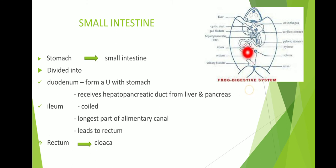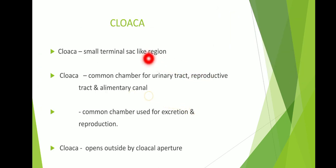The duodenum is followed by the ileum, which is the longest part of the alimentary canal. The ileum leads into a short and broad portion called the rectum. The rectum continues to the cloaca, which is a small terminal sac-like region — unlike humans who have an anus, frogs have a cloaca. It is a common chamber for the urinary tract, reproductive tract, and alimentary canal, into which the urinary bladder and genital ducts open.